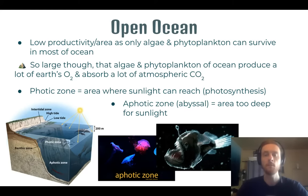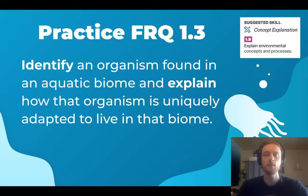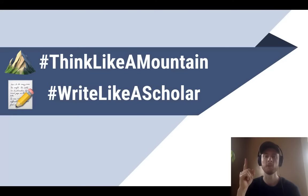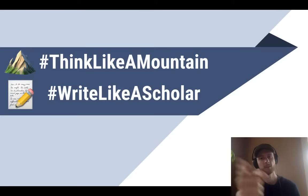A big theme from all aquatic biomes is that the organisms living in them need to be uniquely adapted to survive the conditions found in those biomes. Our practice FRQ for topic 1.3 involves concept explanation: identify an organism found in an aquatic biome and explain how that organism is uniquely adapted to live in that specific biome. Thanks for tuning in — don't forget to like this video if it was helpful, subscribe for future APES video updates, and as always, think like a mountain, write like a scholar.